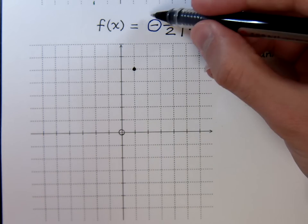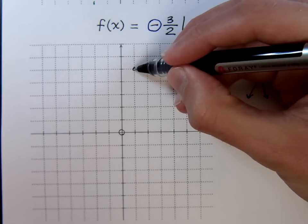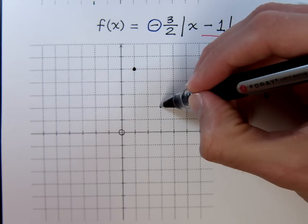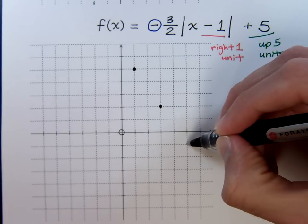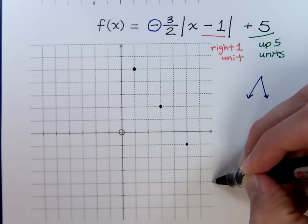So, using this slope of negative three halves, from this point I'm going to go down three and over two. Down three and over two and we're just going to keep on going until I run out of room.